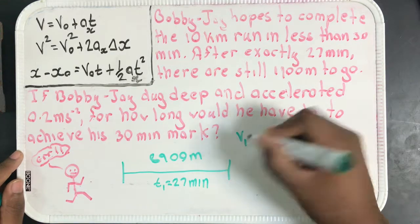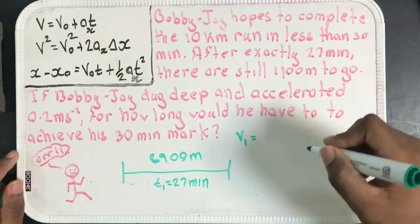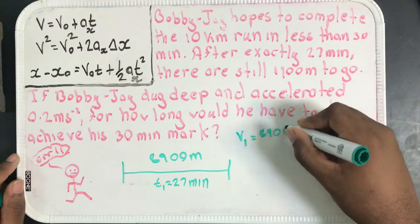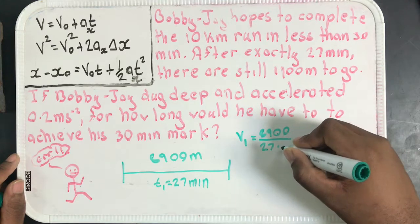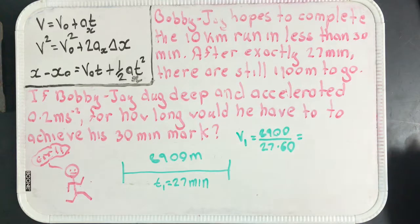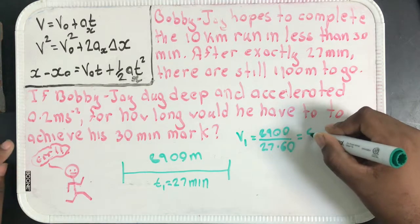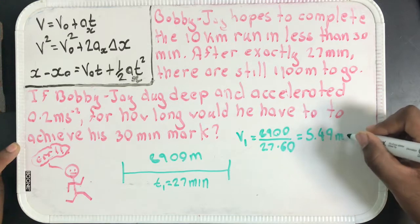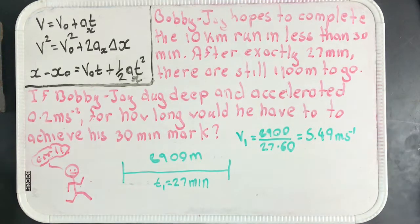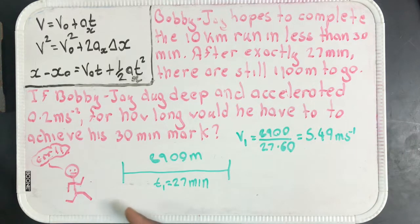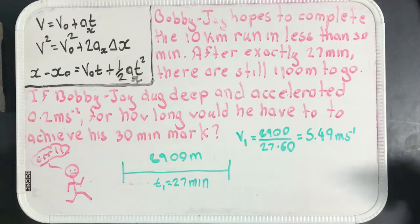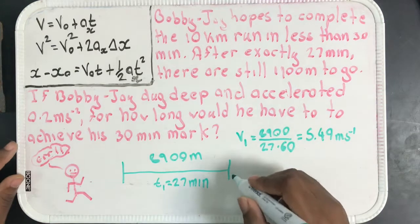We can find that, and I will call that v1. We know velocity is just distance over time, so the distance is 8900 and the time is 27 times 60 because we want this in seconds. If we quickly calculate that, 8900 divided by 27 times 60, we get 5.49 meters per second. So Bobby J's average velocity for this stretch is 5.49 meters per second.